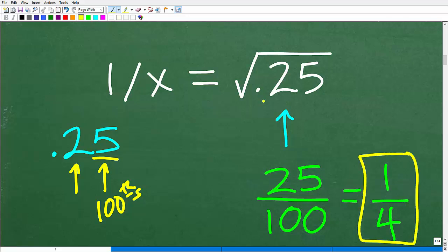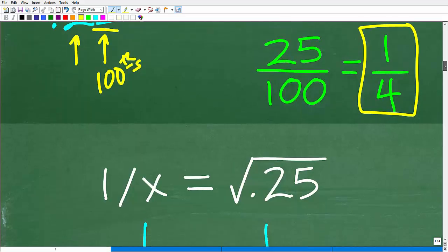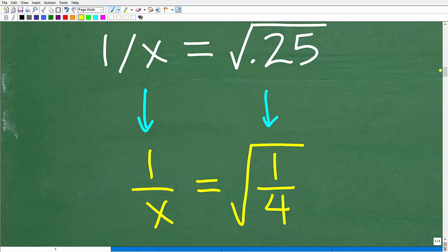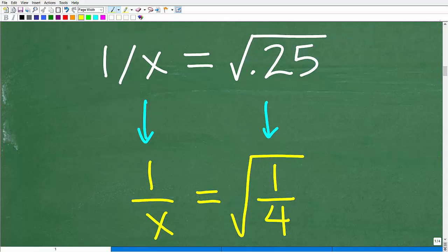So instead of the square root of 0.25, we're going to have the square root of 1 over 4. So now let's go ahead and see what we need to do. And what we need to do is just go ahead and rewrite this problem by taking this decimal and expressing it as a fraction.